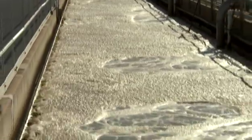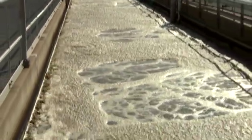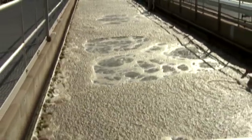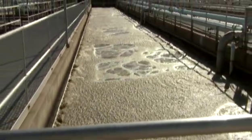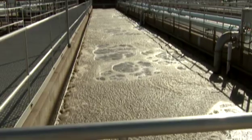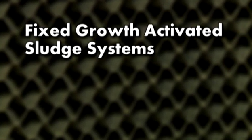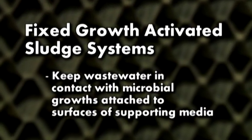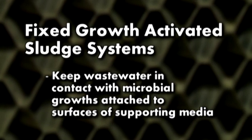Wastewater is distributed over the fixed media producing a biological slime that coats the surface. These biological slimes include bacteria, protozoa, fungi, and other living organisms that coat the surface of the fixed growth systems and feed on organic wastes. Organisms attached to the media in the upper layer grow quickly, feeding on the food supply.